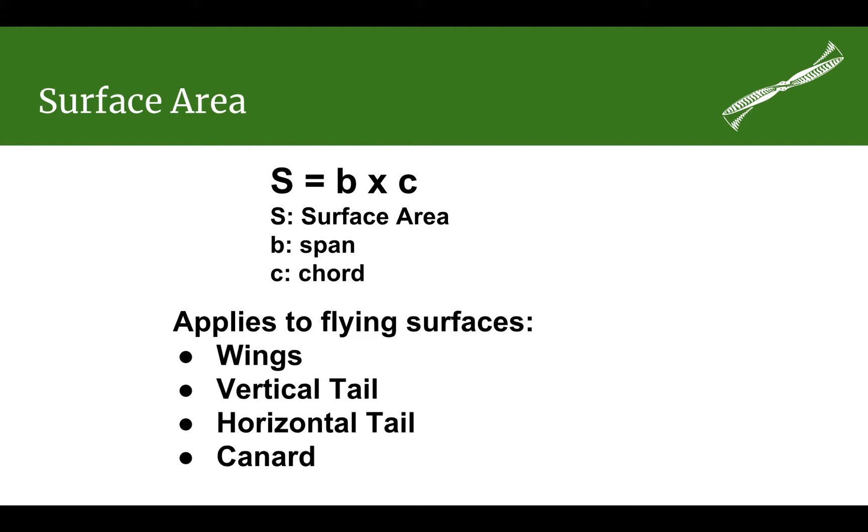One of the things that surface area is not is the three-dimensional surface area. It does not include top and bottom and ends of the tips. That would be three dimensions. It's really just the two-dimensional surface area. The three-dimensional surface area is really what's called the wetted area, but we'll define that when we start talking about drag.